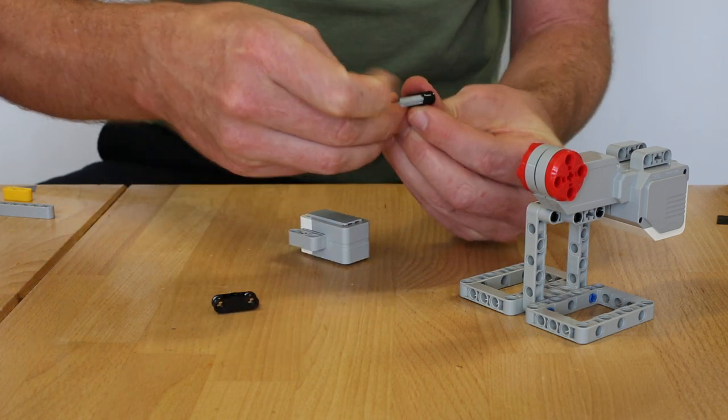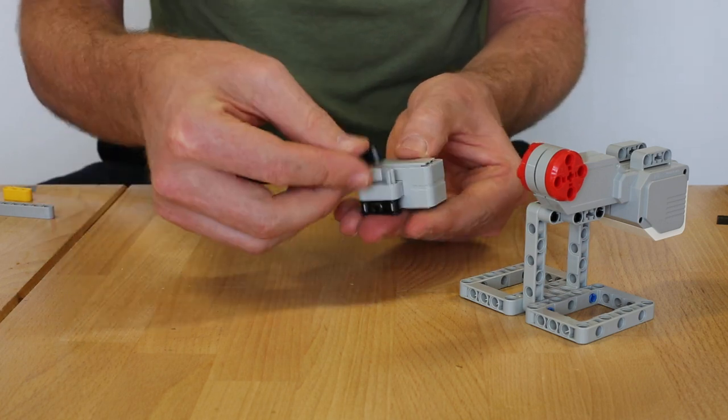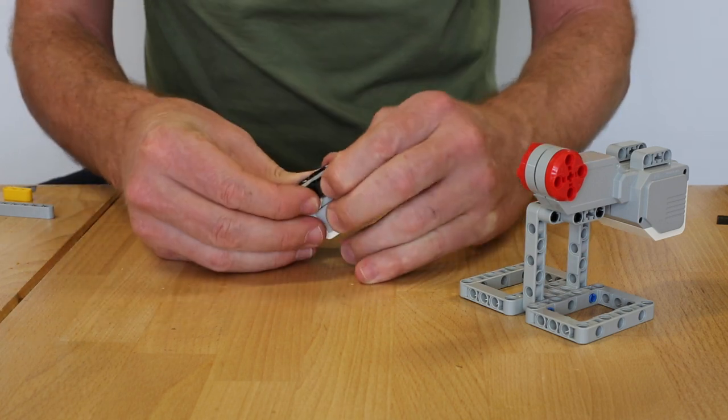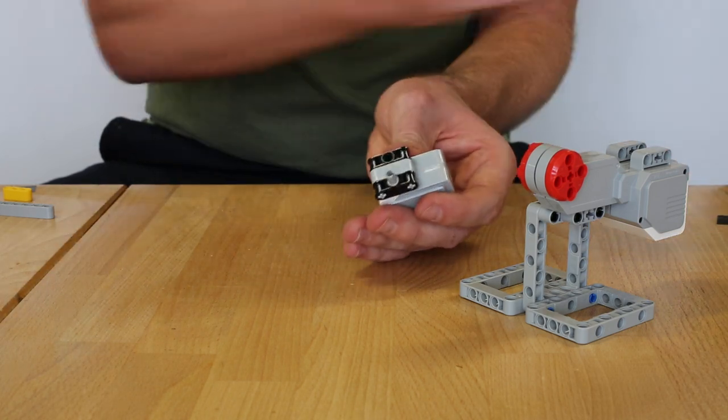Slide those into there like that, slide it through the gyroscope, and then place it on the other side.